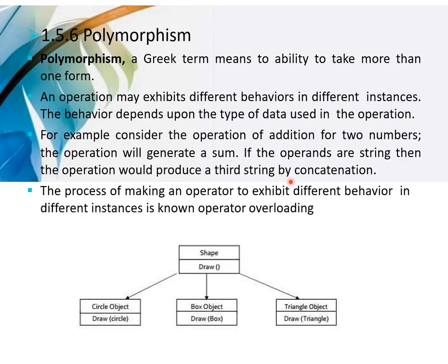The next concept is polymorphism. Polymorphism means the ability to take more than one form. For example, engineering is a technical branch having sub-branches such as computer science, IT, information technology, AI and DS, electronics, and electrical — that is an example of polymorphism. The process of making an operation exhibit different behavior in different instances is known as operator overloading.